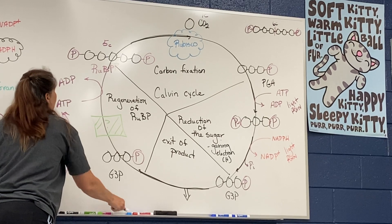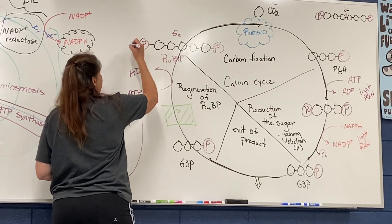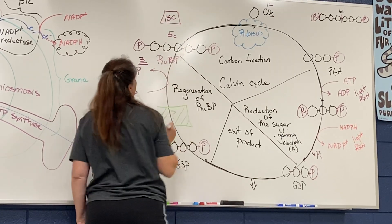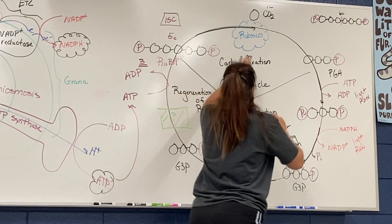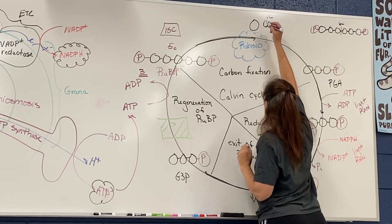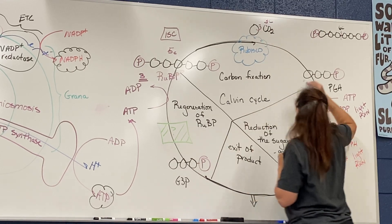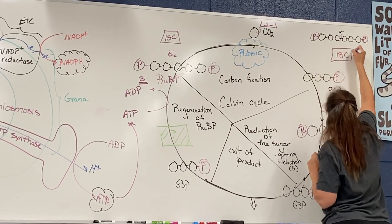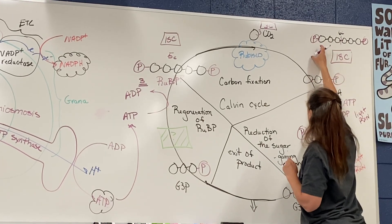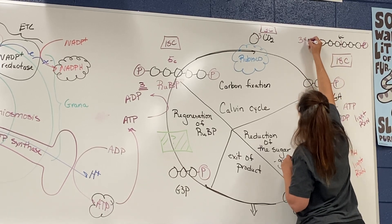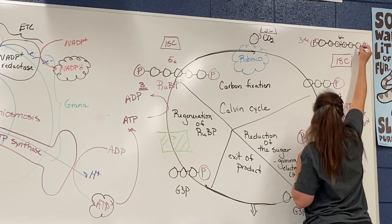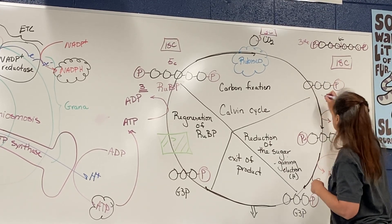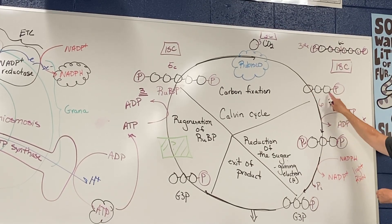So if we balance this whole thing out, we're going to start with three molecules of RuBP, which means I have a total of 15 carbon atoms. I'm going to take not just one carbon dioxide but three, giving me three carbons. When I add 15 plus 3, I end up with 18 carbons — three six-carbon molecules. When I cut them in half, I now have six molecules of PGA. Six times three still gives me my 18 carbons.